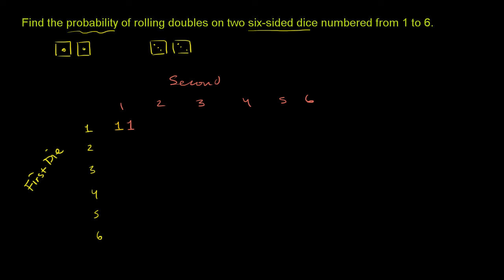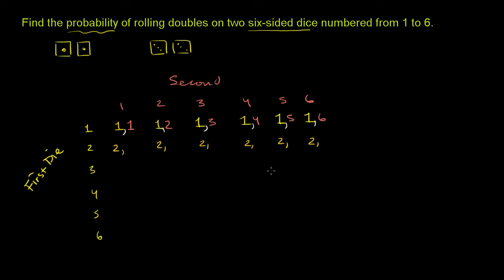These are all the situations where I roll a 1 on the first die. With the second die I could get a 1, 2, 3, 4, 5, or 6 — so: 1 and 1, 1 and 2, 1 and 3, 1 and 4, 1 and 5, 1 and 6. And these are all situations where I roll a 2 on the first die: 2 and 1, 2 and 2, 2 and 3, 2 and 4, 2 and 5, 2 and 6.